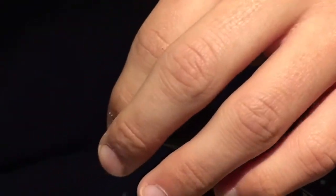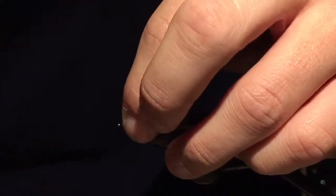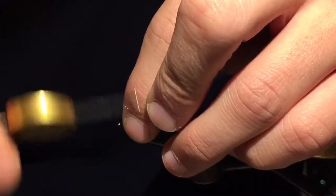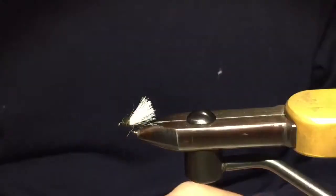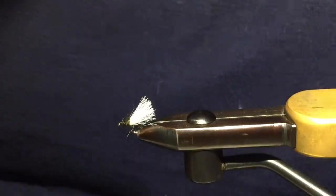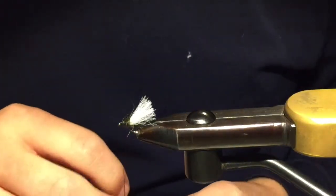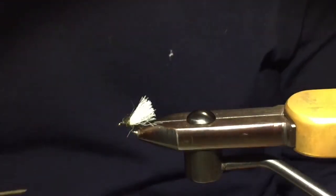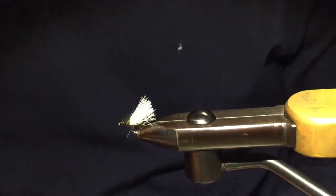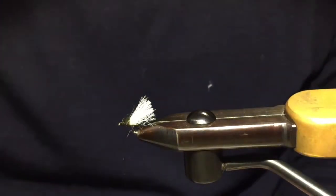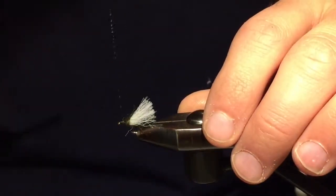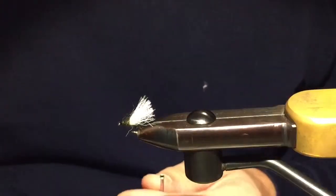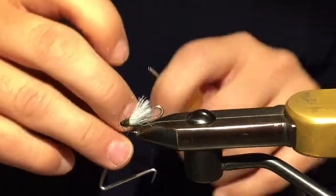Then pull everything back here just to make a smooth even head thread. A couple of turns will do just like that. Then put some varnish on the thread. Need two more turns just to kind of get the glue in there and whip finish.